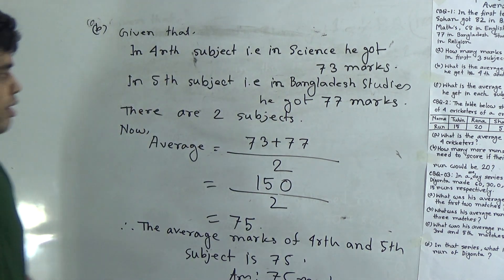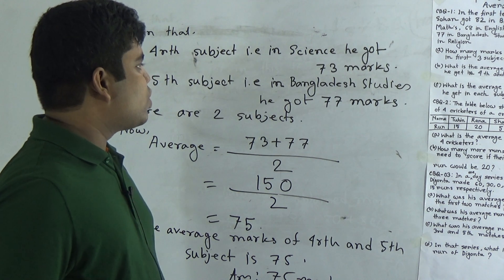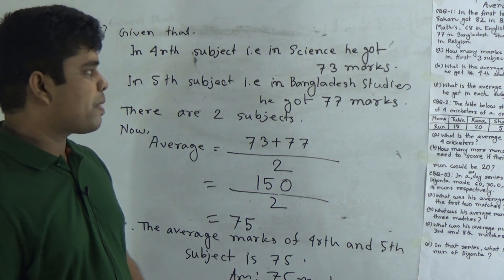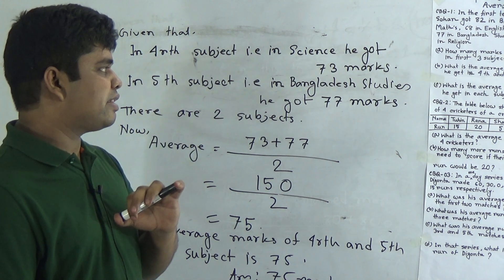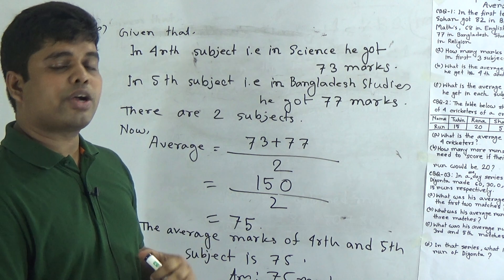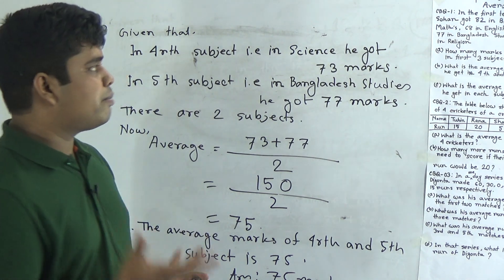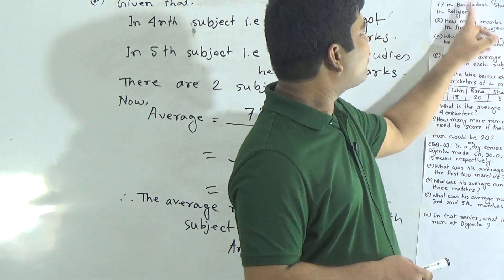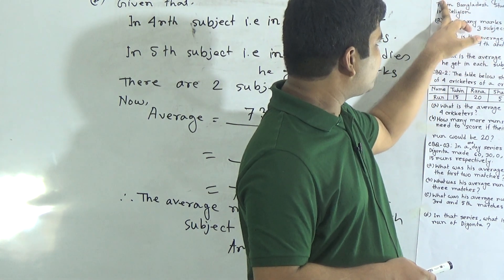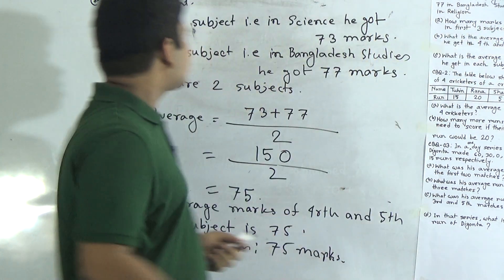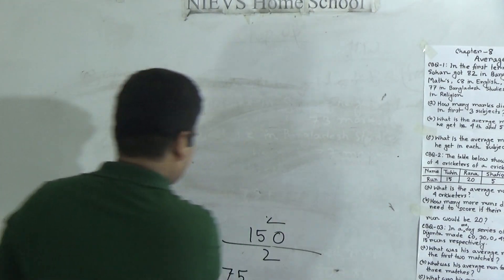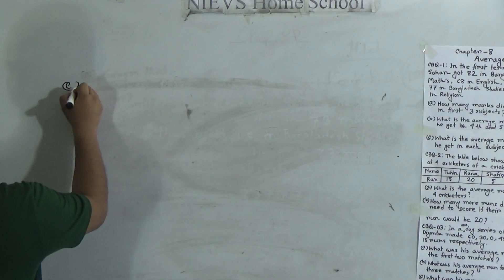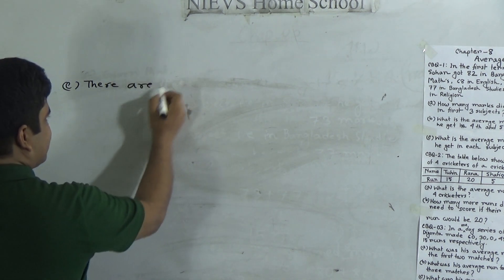I hope you have understood question B. Next we shall solve question C: what is the average marks he got in each subject? We find out the summation of each subject, then divide that summation by the number of subjects. Counting the subjects: Bangla, 1, 2, 3, 4, 5, and 6. There are 6 subjects.